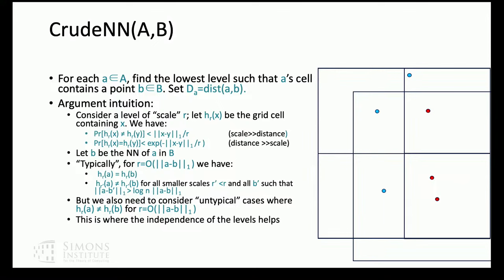Another audience question: instead of building a quad tree, could you make random choices along each axis independently? You'd lose the property that nearby points stay in the same cell across different levels — specifically you need h_r and h_{2r} to be independent, which the quad tree construction provides.